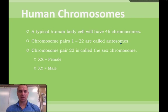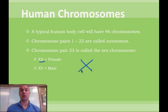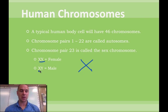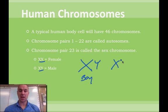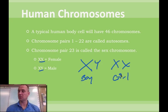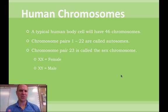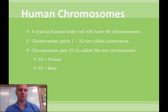Who determines the sex of a child? A mama only has an X, so she's going to give every child — boy or girl — an X. That's all she has to give. The daddy, on the other hand, has an X or a Y. If he gives a Y, it's a boy; if he gives an X, it's a girl. So the daddy determines the sex of the child. You know the classic story about Henry VIII killing his wives because they didn't give him a boy — they didn't actually have anything to do with it.